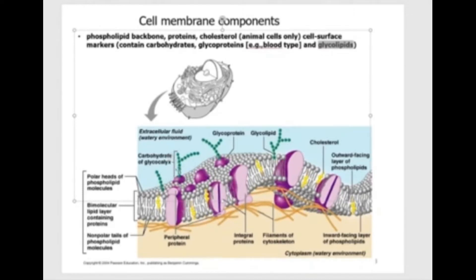There's also the carbohydrates of the glycocalyx. This means there are a lot of sugars on the surface of the cell membrane, making it very sticky. When you think of a sugar solution, it can be really sticky, and the same is true for the exterior of the cell membrane because there's a lot of sugar attached to it.